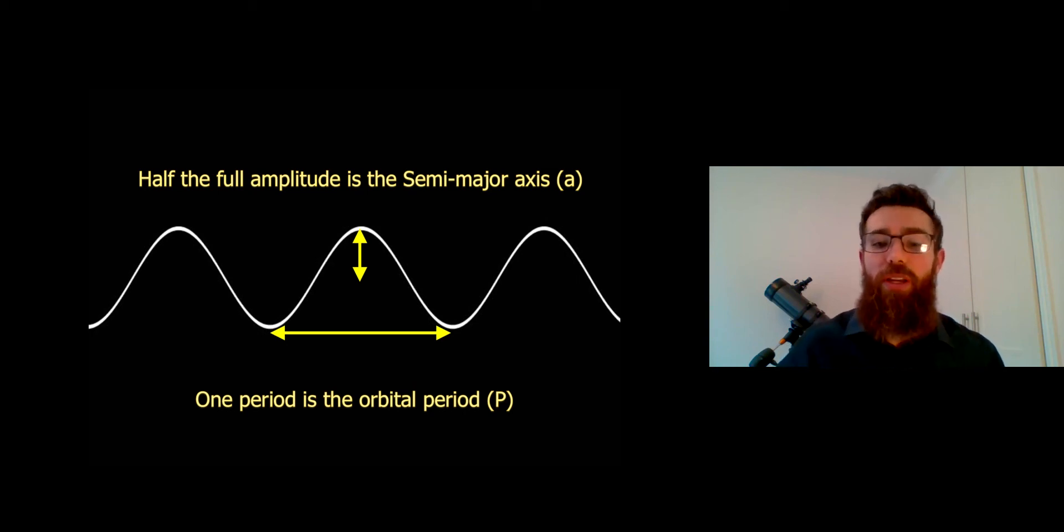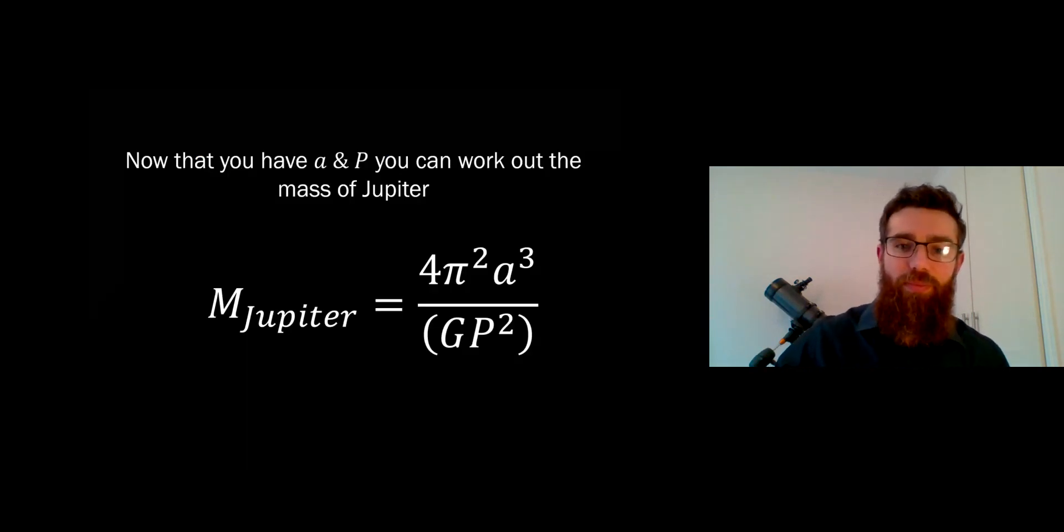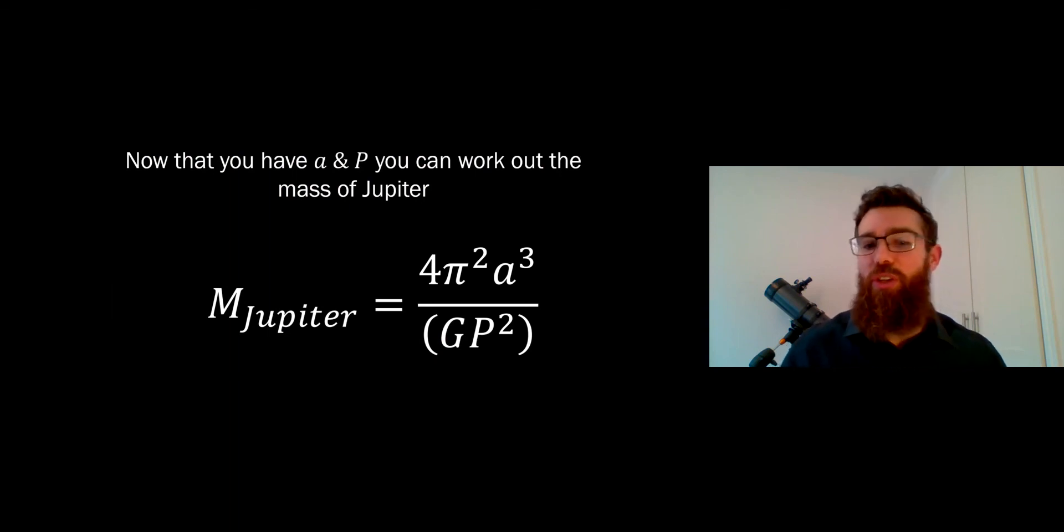Once you've got that, you can get your two variables out for your equation. One pair of that wave would be the orbital period. You can either measure from trough to trough to peak and that will give you your orbital period. And half of the full amplitude is going to be your semi-major axis, your orbital radius. You can measure from trough to peak and just half it to get your semi-major axis. When you've got those, you can go back to that equation and put your values in to get a mass for Jupiter.